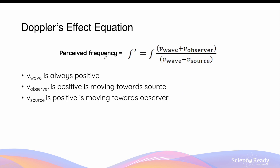Before we delve into a calculation example using the equation, it is important to know that you will come across different forms and variations of the same equation. This equation is given by the NASA datasheet, which is the one I recommend all students sitting the HSC to become familiar with. In this equation, the velocity of the wave, whether it's a sound wave or light, should always be a positive value.